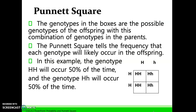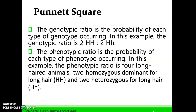It's not saying that there are exactly four offspring. In this example, the genotype uppercase H uppercase H will occur 50% of the time and the genotype uppercase H lowercase h will occur 50% of the time. The genotypic ratio is the probability of each type of genotype occurring — here it is two HH to two Hh. The phenotypic ratio is the probability of each type of phenotype occurring. In this example, all four potential offspring have long hair: two are homozygous dominant and two are heterozygous for long hair, giving a phenotypic ratio of four long-haired animals.